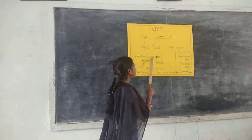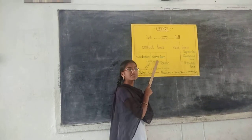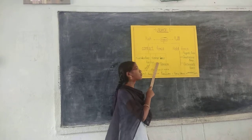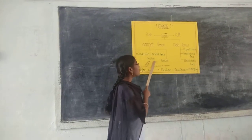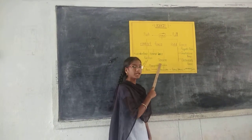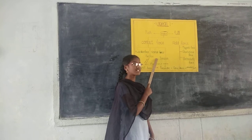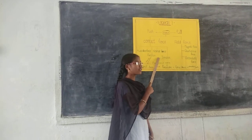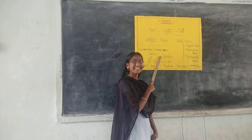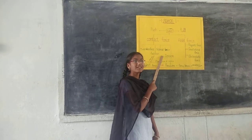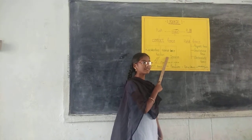Normal force: the force perpendicular to the object's surface. Example: a book on a table — the table exerts a force on the book, and the book exerts a force on the table.